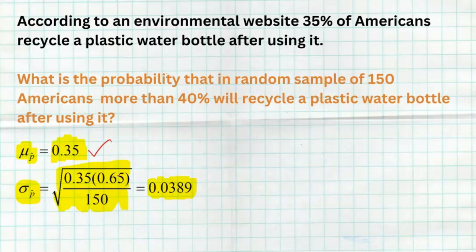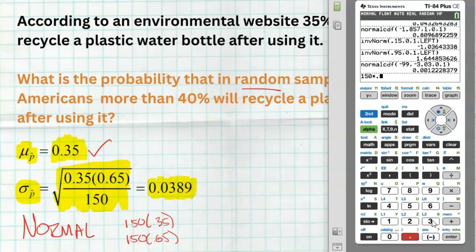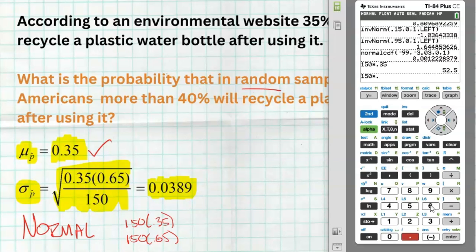Now check conditions. The center is 0.35 only if samples are random — and it says that. We need independence, so the sample of 150 must be under 10% of the population. And for the shape to be normal when working with proportions, we need 10 or more expected successes and 10 or more expected failures: 150 × 0.35 = 52.5 and 150 × 0.65 = 97.5 — both well above 10. So we can use the normal model.